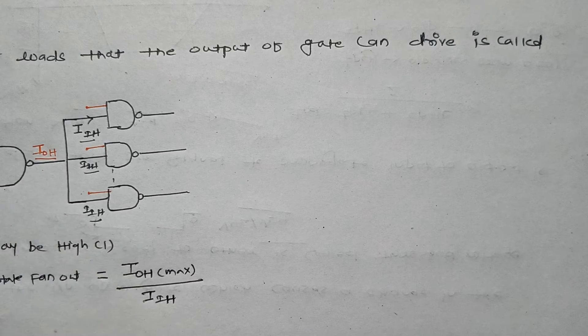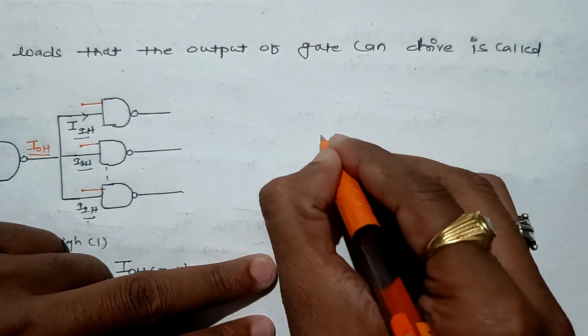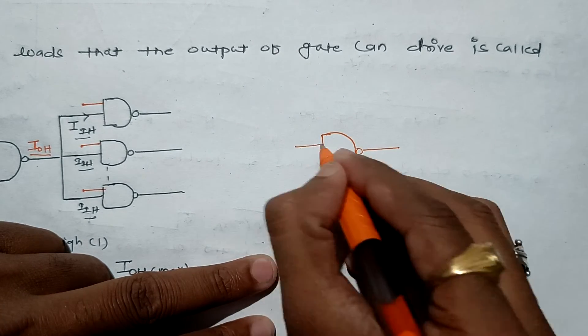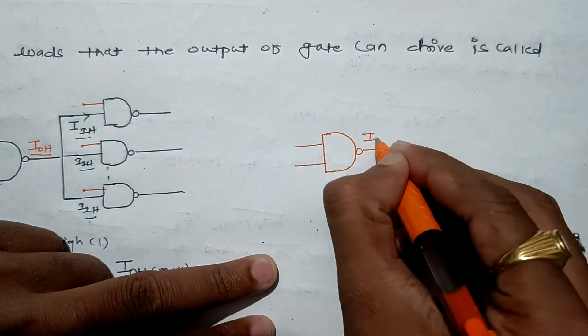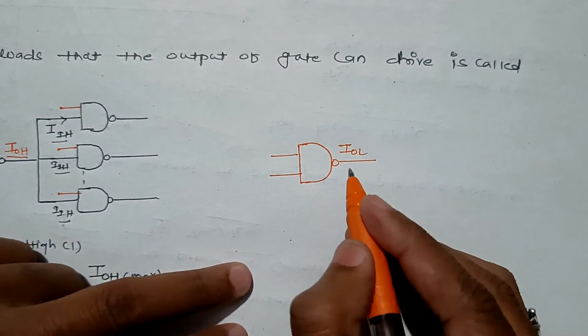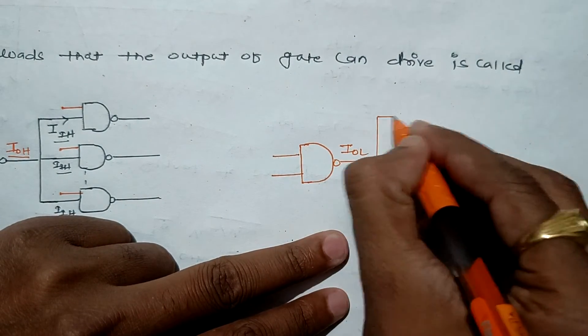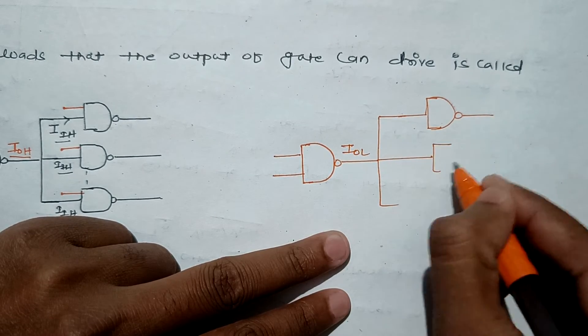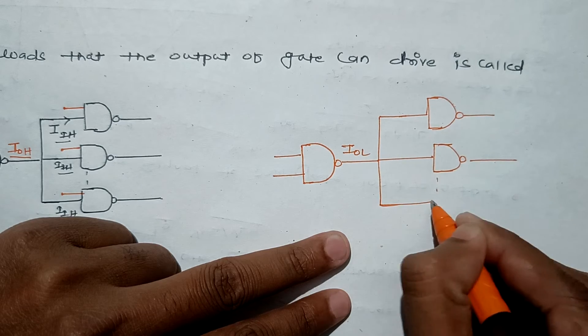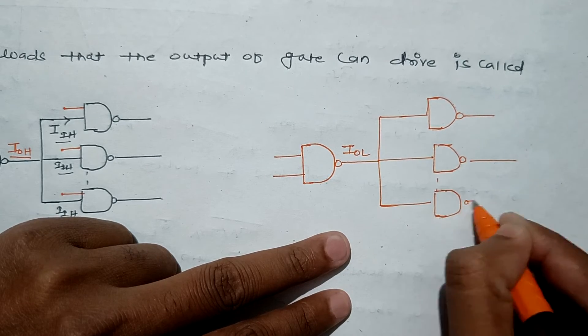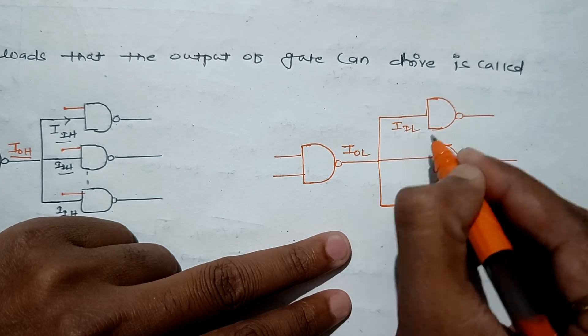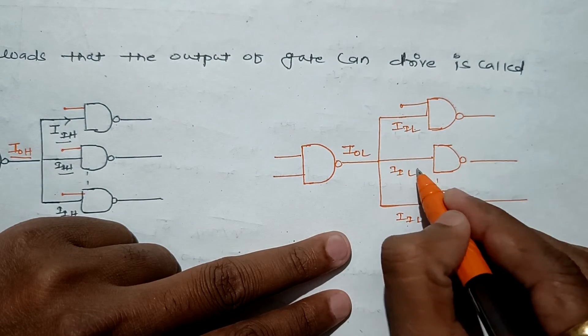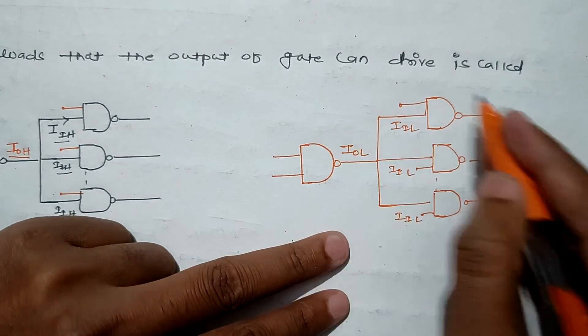In case of low state, we have an AND gate with two inputs. Let's suppose our output is low, so we write IOL - that is low output current. It is driving the first AND gate, second AND gate, and so on up to the last gate. These currents will be IIL (input low current) for each gate.